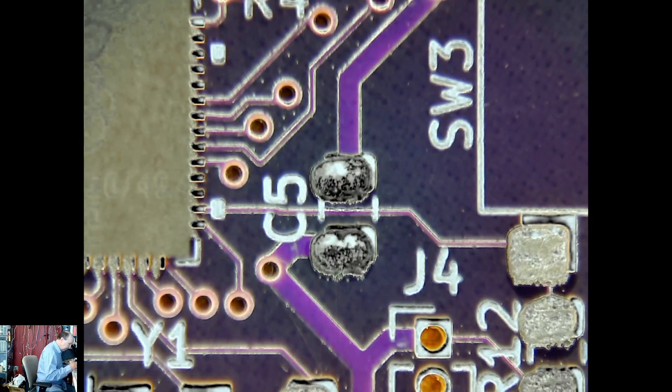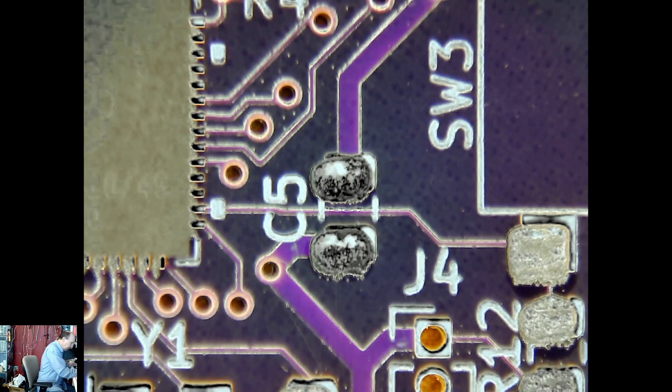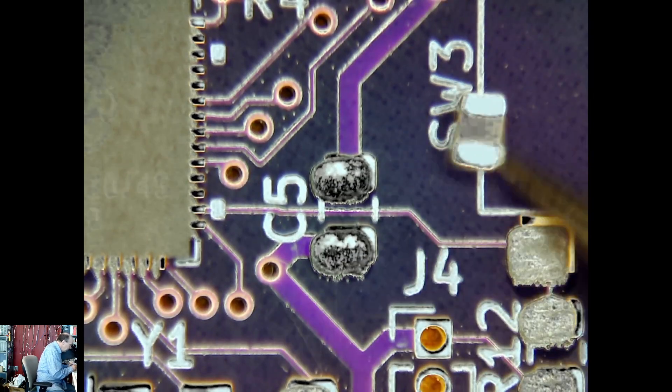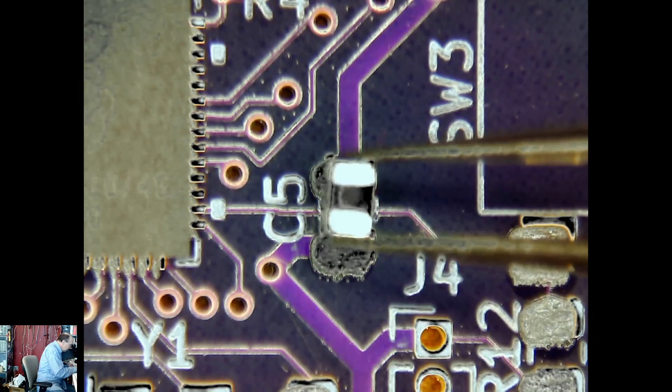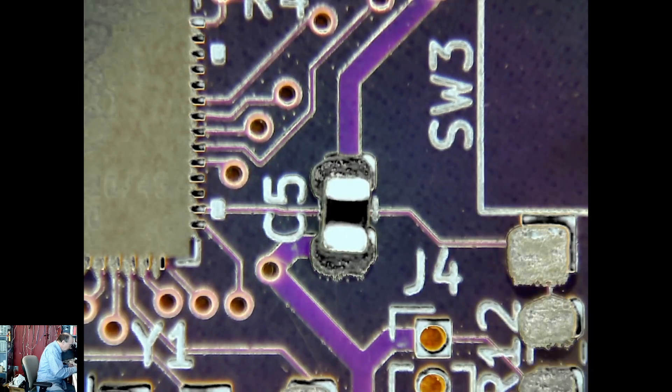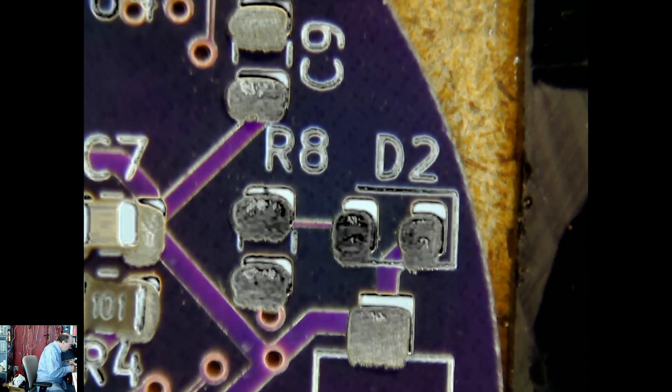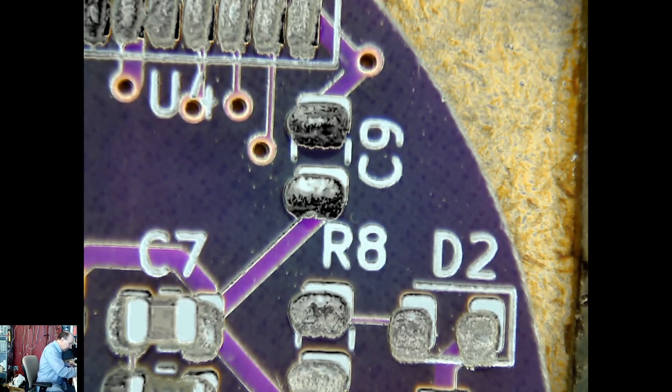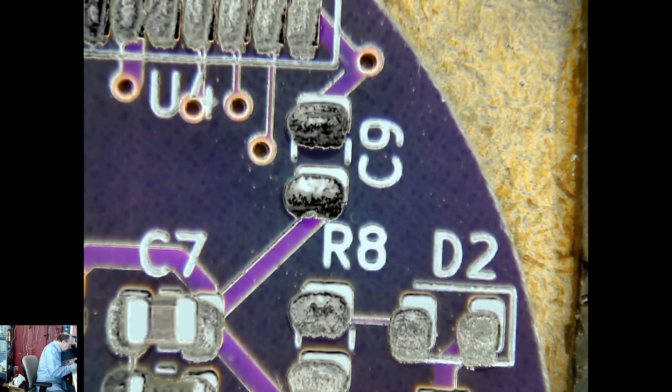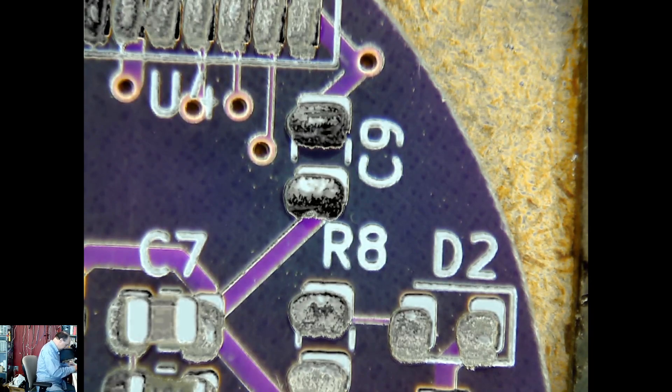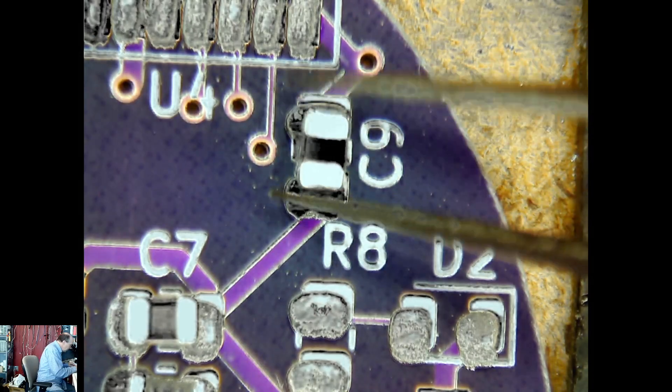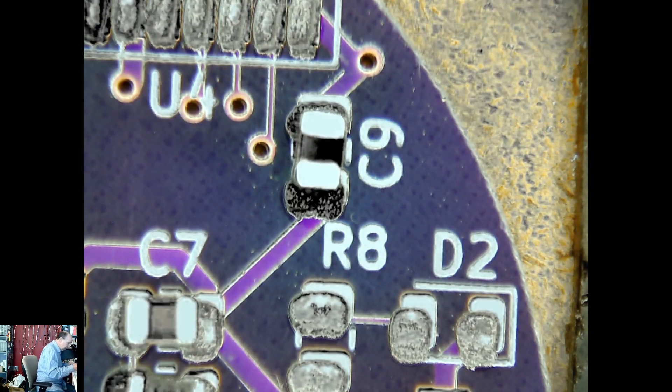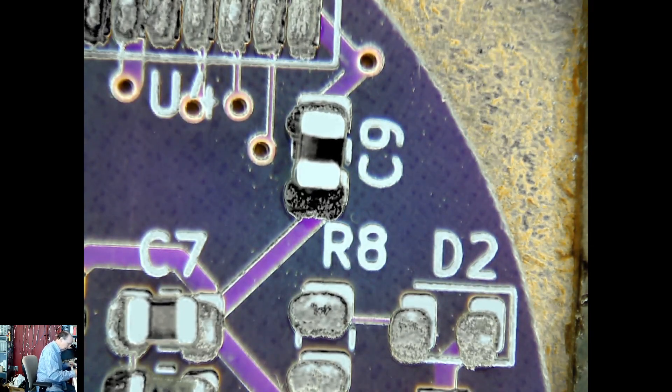C5 is right there. C5 is a 10, 10 microfarad. We got a C9 and an R8. C9 is also a 10. R8 is a 1k.